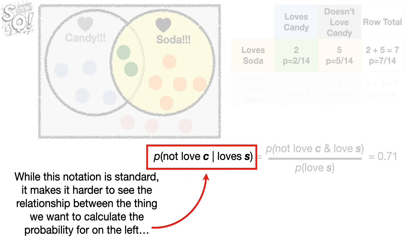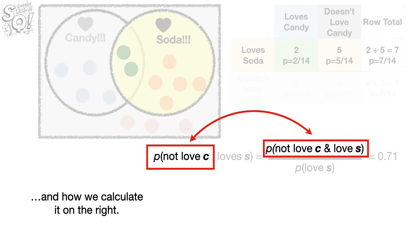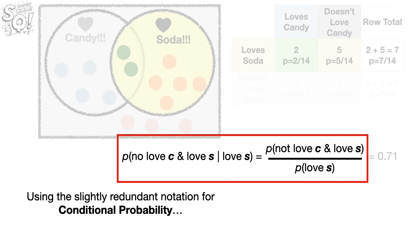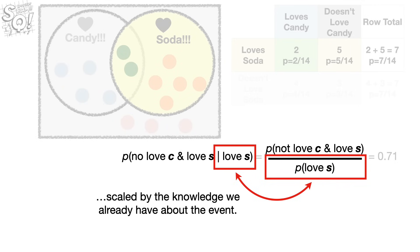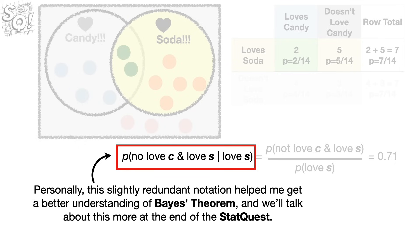While this notation is standard, it makes it harder to see the relationship between the thing we want to calculate the probability for on the left and how we calculate it on the right. Using the slightly redundant notation for conditional probability makes it obvious that we want the probability that an event happens, scaled by the knowledge we already have about the event. Personally, this slightly redundant notation helped me get a better understanding of Bayes' theorem, and we'll talk about this more at the end of the StatQuest.